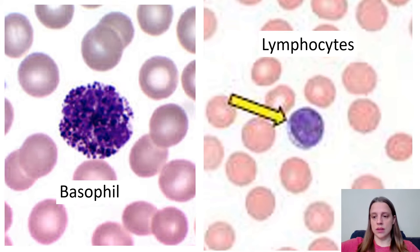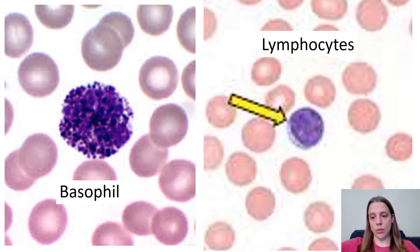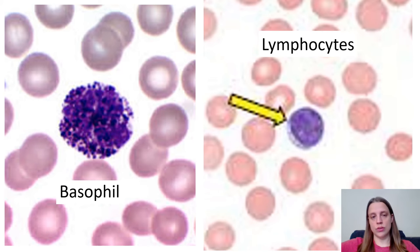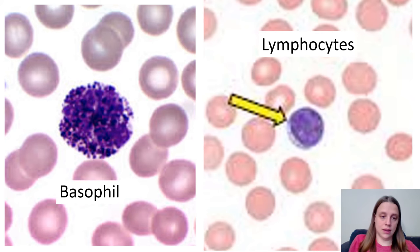Also, in the lymphocyte there will always be some amount of visible cytoplasm. All the dark purple in the middle of the lymphocyte is the nucleus, and that little pale halo around the edge is the cytoplasm — some lymphocytes have a little more, some have less, but there will always be some visible cytoplasm. In the basophil you don't see anything, just dark purple granules.